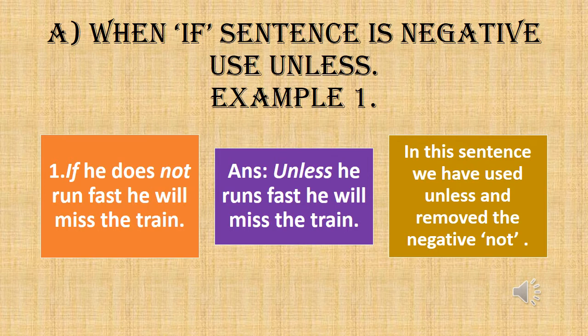To understand further, let us have a look at the examples. When an 'if' sentence is negative, use 'unless'. Negative means the sentence will have words like no, not, never, or nothing. Example 1: If he does not run fast, he will miss the train. The answer is: unless he runs fast, he will miss the train. Here we have used 'unless', removed the negative 'not', and replaced 'if' with 'unless'. Remember, the meaning of the sentence should not change.